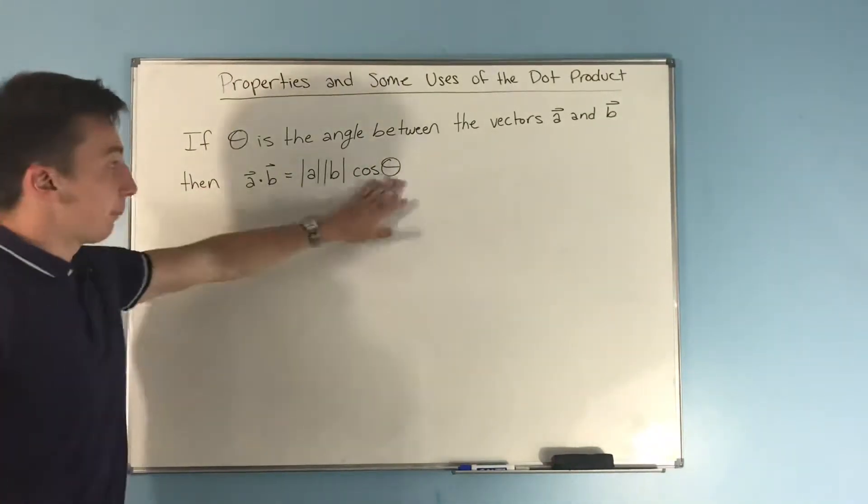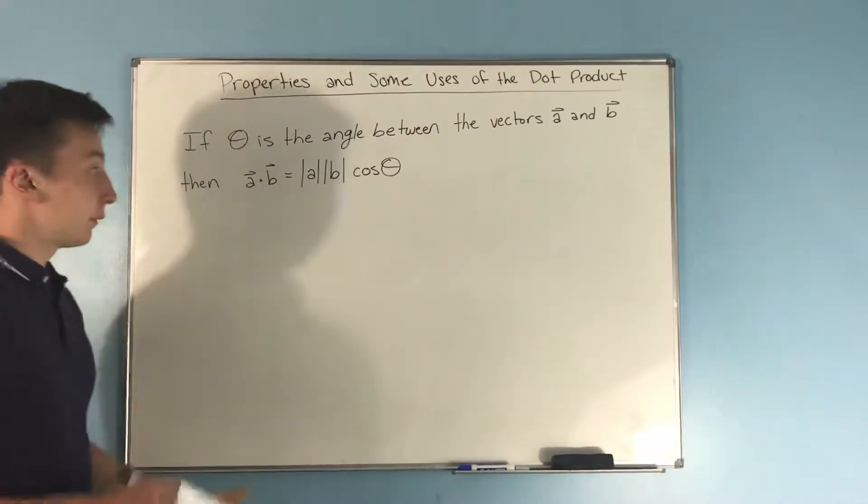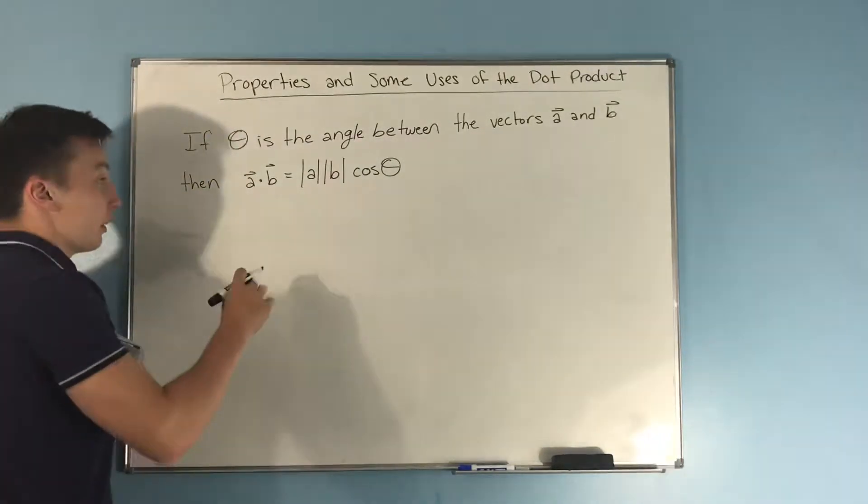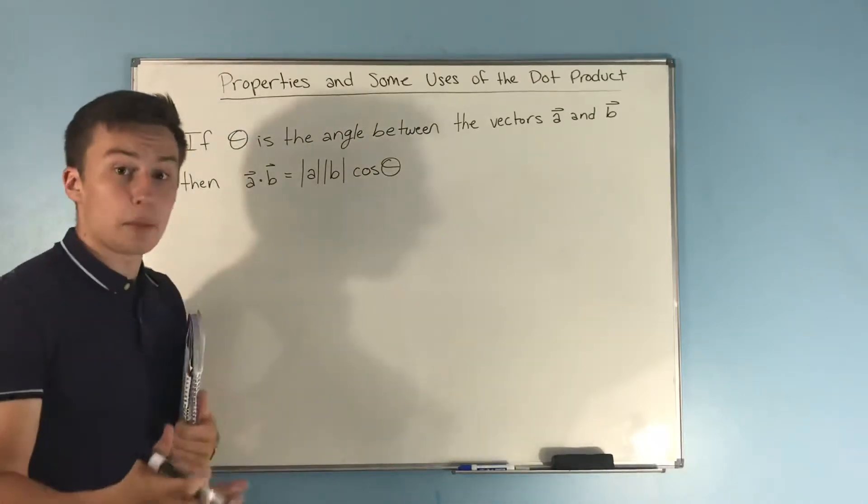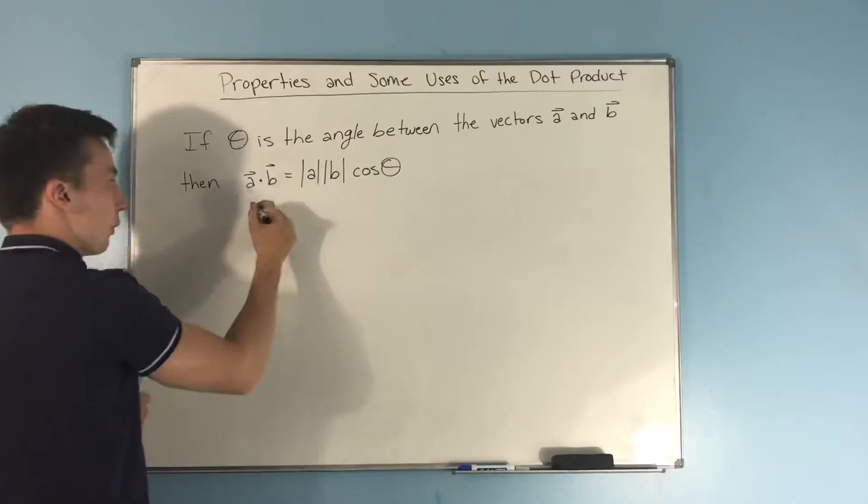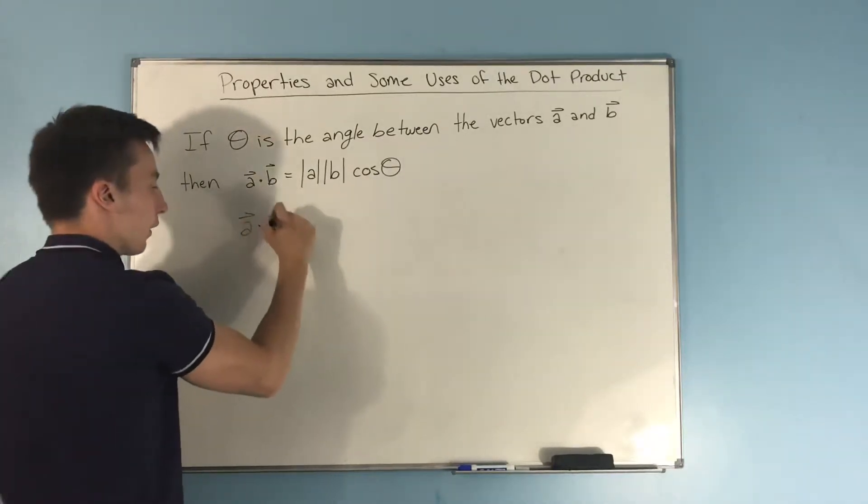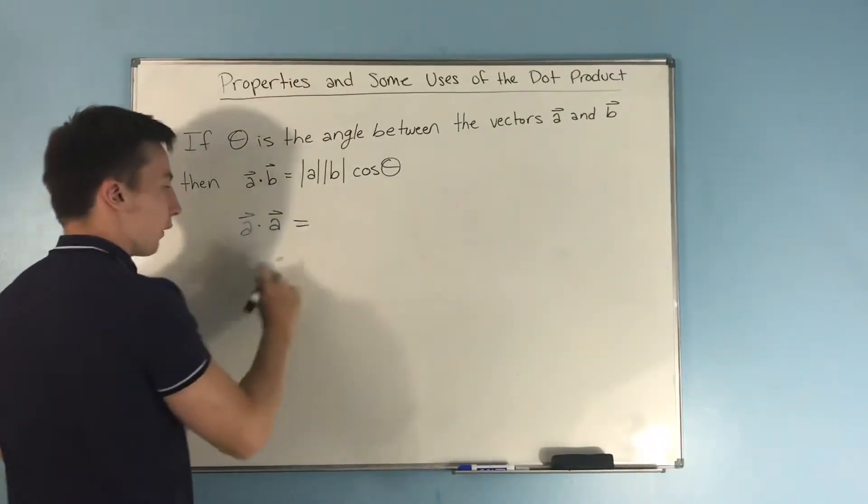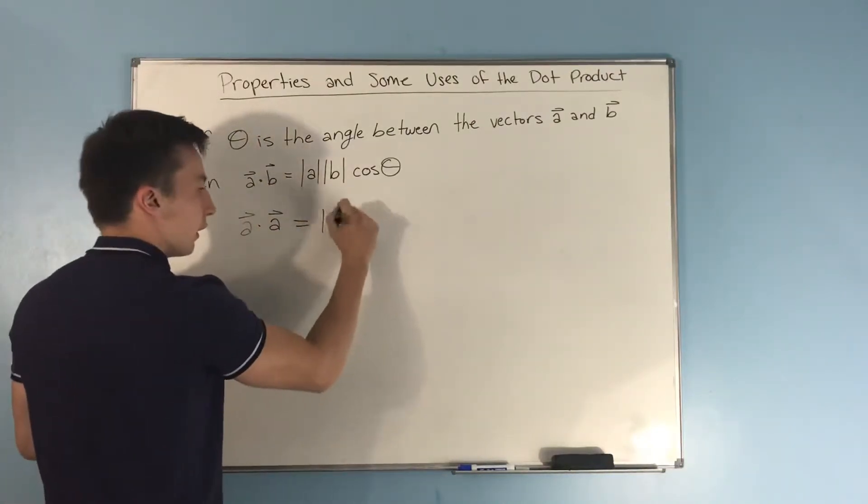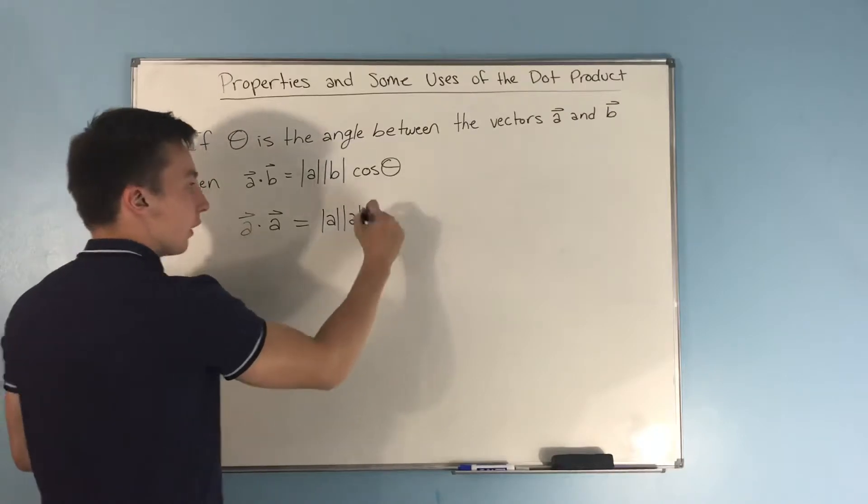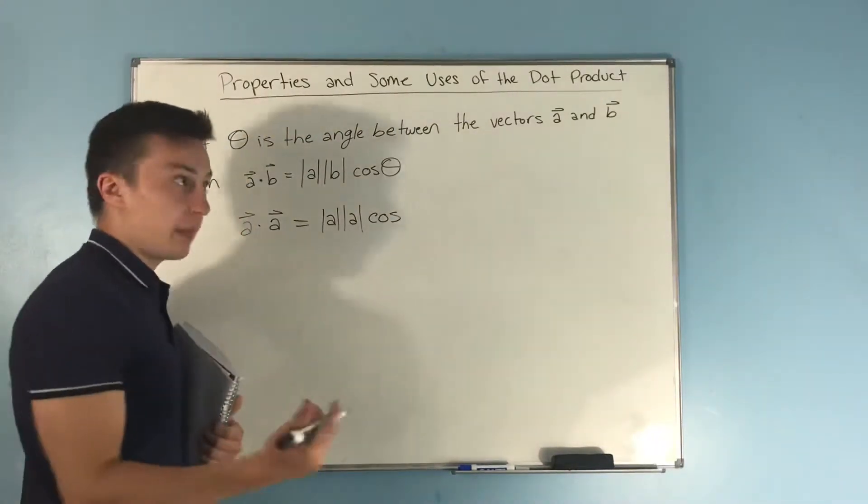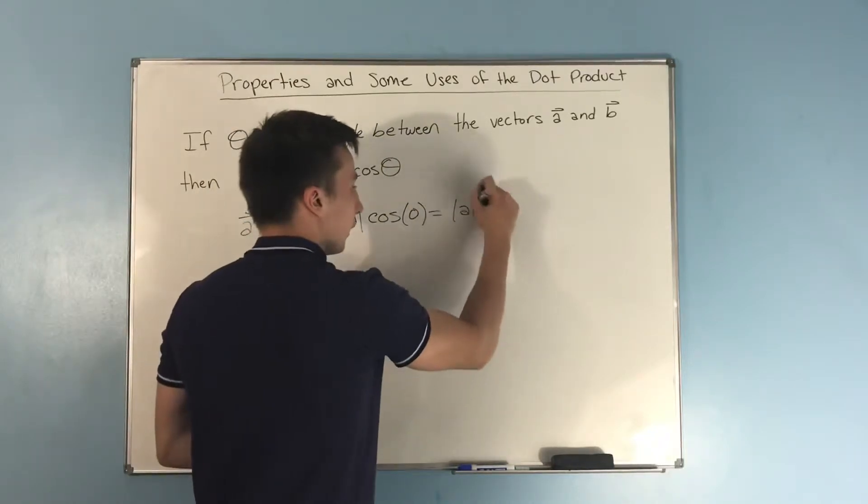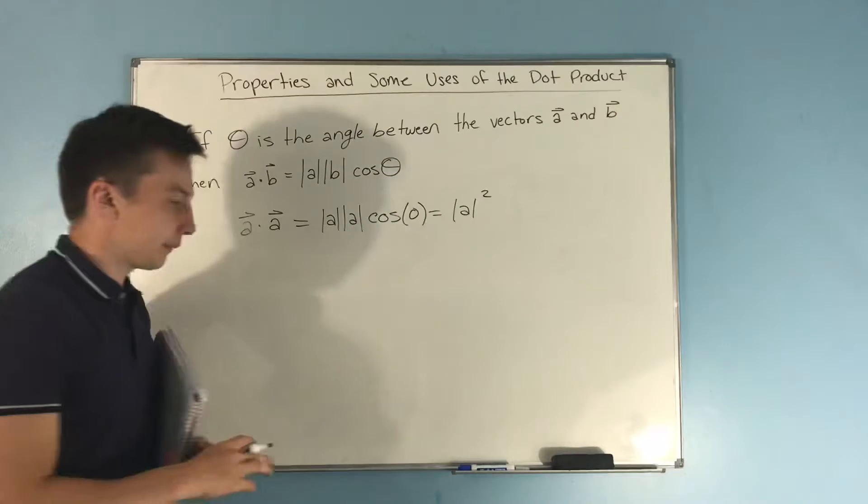So you're able to find the angle between vectors a and b by dotting a and b and then dividing by the magnitudes of each. Now before I actually solve for cosine theta here, because that's what I'm about to do, you can see that if we were to do a dot a, which is one of the properties from before, and this is kind of the other proof that I was talking about, you now have the magnitude of a times the magnitude of a times cosine of, well, what's your angle going to be? Well it's the same vector, so the angle between them is 0. Cosine of 0 is 1. You end up getting the magnitude of a squared.